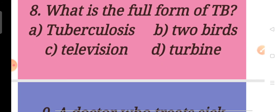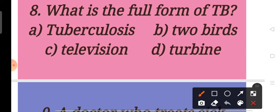Now move to question number 8. What is the full form of TB? A. Tuberculosis, B. Tuberds, C. Television, D. Turbine. Children, answer will be A. Tuberculosis.